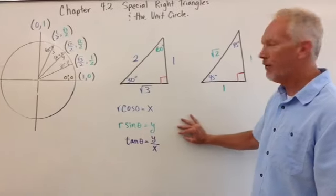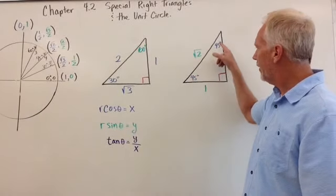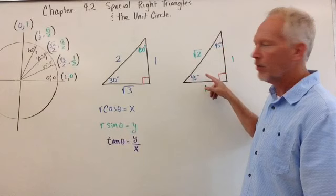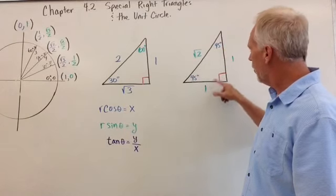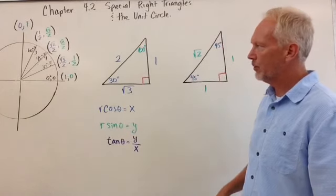So we also have a 45-45 triangle, special right triangle, and there as follows: 1, 1, root 2.